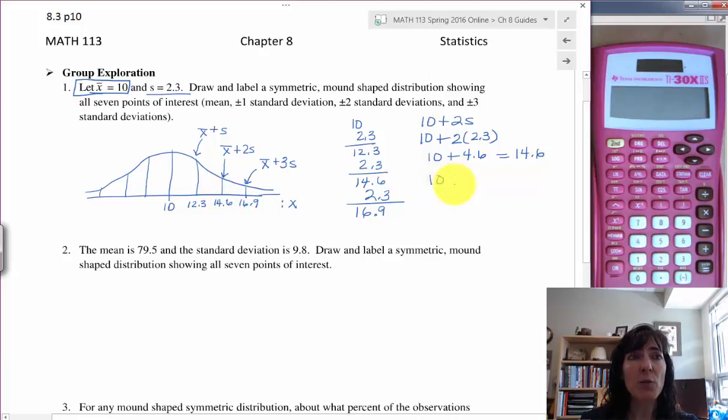I can do the same thing for that higher one: 10 plus 3s, which would be 10 plus 3 times my standard deviation of 2.3. When I multiply that I get 6.9 plus 10, which is 16.9, and that's this data point right here.